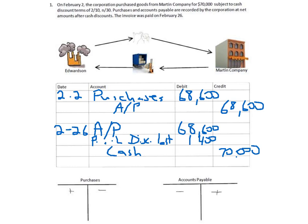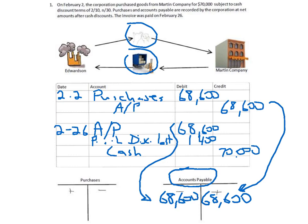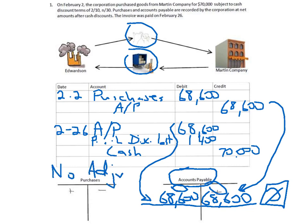Looking at the first transaction — the accounts payable — we posted $68,600 when we purchased inventory and then debited it back when we paid it off. The balance is now zero. Debits equal credits, so this is neither overstated nor understated. There is no adjustment necessary for this first transaction.